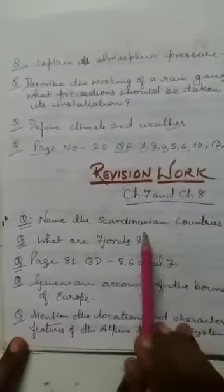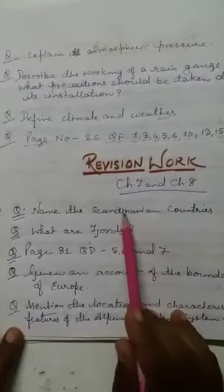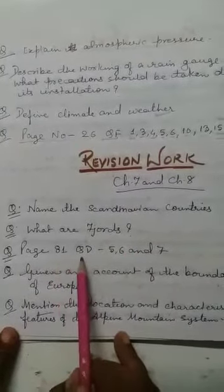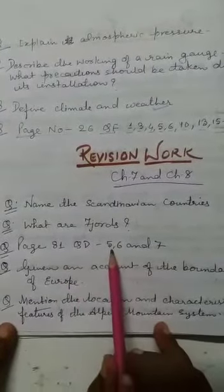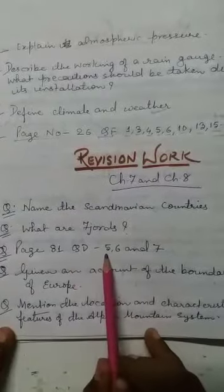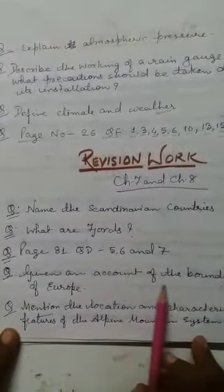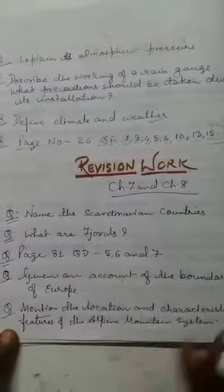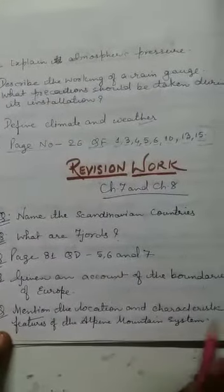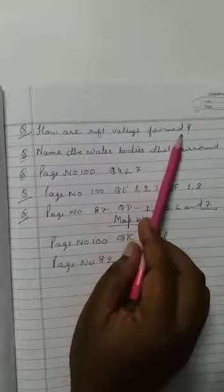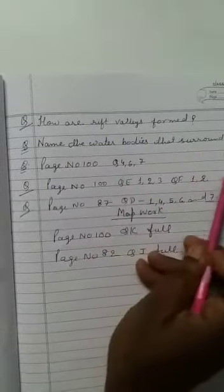There are few questions here. Page number 81, question number D, 5, 6, and 7. Given an account of the boundaries of Europe, mention the location and characteristics of the alpine mountain system. Afterwards, how are rift valleys formed? Name the water bodies that surround Africa.